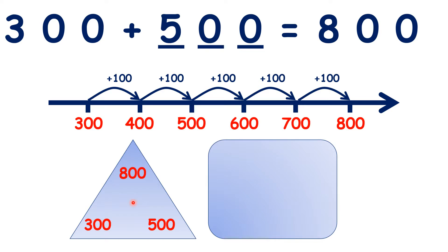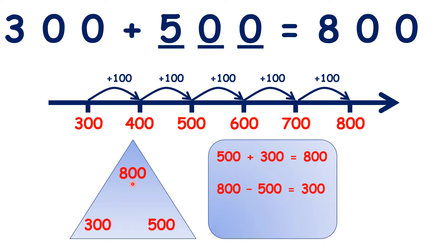If we know this, we also know three other facts. We know that 500 plus 300 is 800, because with addition order doesn't matter. We also know that 800 minus 500 is 300, and 800 minus 300 is 500, because in a number family triangle, when you subtract one of the bottom numbers from the top number, you get the other bottom number.